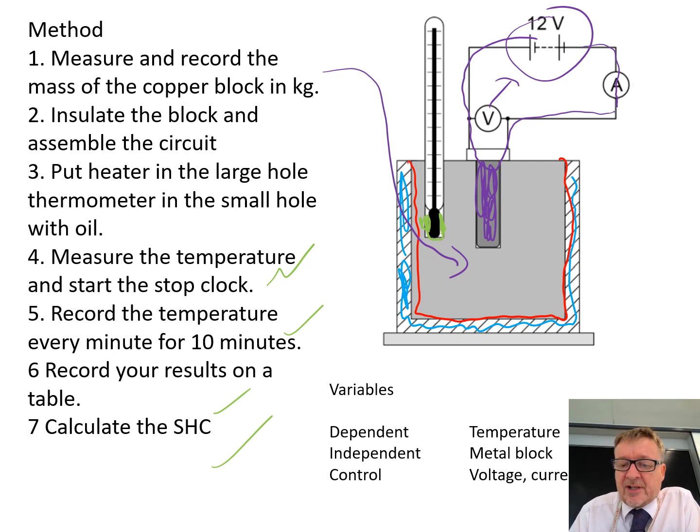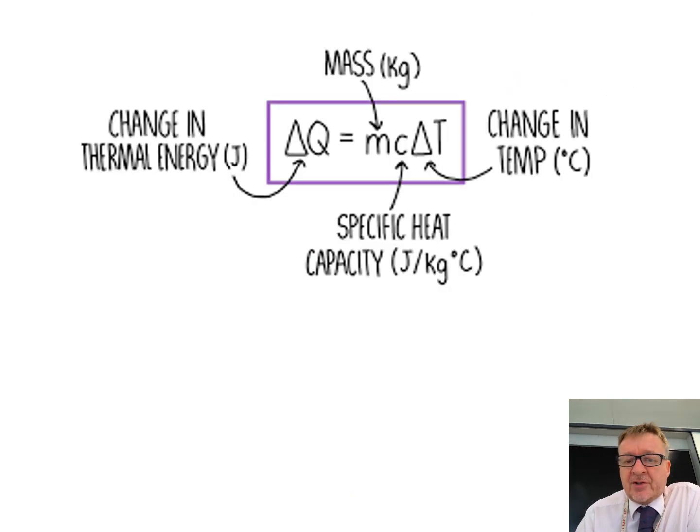Now, on this one I've also just included the variables. So, the measure during the practical itself is your temperature. What you change between your practicals is the metal block. And what stuff stays the same is things like your voltage and your current. Now, that's the principle behind the actual practical itself. And then what you've got to do is you've got to do your calculations. And usually what you'll get asked to calculate is the specific heat capacity.